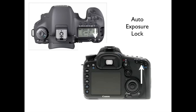For auto exposure lock: when you're in program mode, shutter priority, or aperture priority, if you want to lock your exposure in — remember, in manual mode you select ISO, aperture, and shutter speed and those settings won't change. However, in aperture priority, shutter priority, or program mode, those settings constantly change depending on what direction you're pointing your camera, even with your finger halfway down. To lock your exposure, push the star symbol button. Once you push this button, you will lock your exposure in, and you'll see the little star symbol lit up in your viewfinder, meaning your camera has locked that exposure in for you.